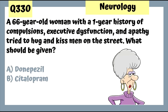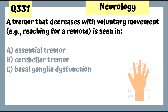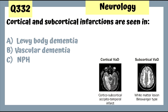Question 330: A 66-year-old woman with a one-year history of compulsions, executive dysfunction, and sexual disinhibition trying to hug strangers — this is Pick's disease, frontotemporal dementia. Give citalopram for the sexual disinhibition aspect. Question 331: A tremor that decreases with voluntary movement — Parkinson's. A tremor that gets worse with voluntary movement — basal ganglia dysfunction, Parkinson's disease. Essential tremor gets worse with voluntary movement.